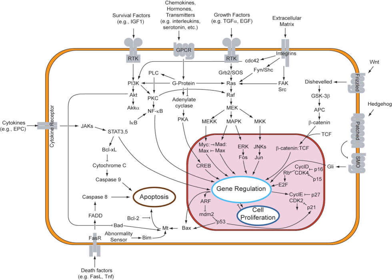The notch signaling mechanism is an example of juxtacrine signaling, also known as contact-dependent signaling, in which two adjacent cells must make physical contact in order to communicate. This requirement for direct contact allows for very precise control of cell differentiation during embryonic development. In the worm Caenorhabditis elegans, two cells of the developing gonad each have an equal chance of terminally differentiating or becoming a uterine precursor cell that continues to divide. One cell will happen to produce more of a cell surface protein that activates the notch receptor on the adjacent cell, activating a feedback loop that reduces notch expression in the differentiating cell and increases notch on the surface of the cell that continues as a stem cell.